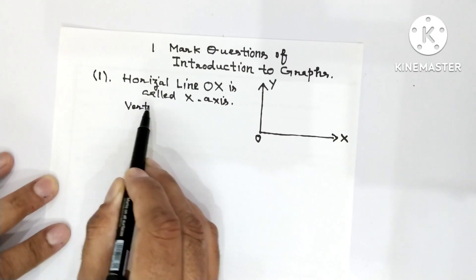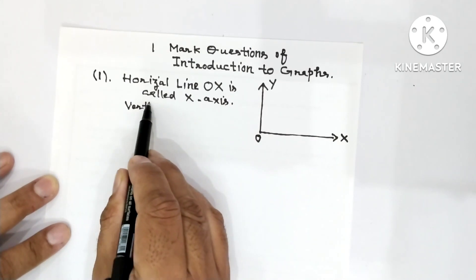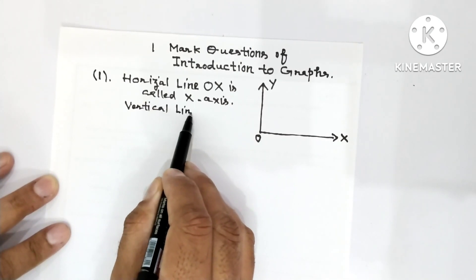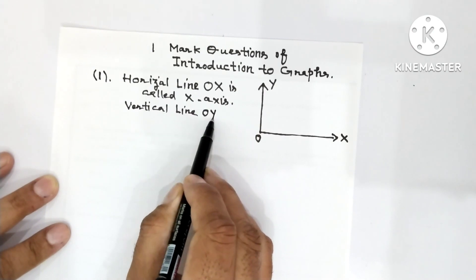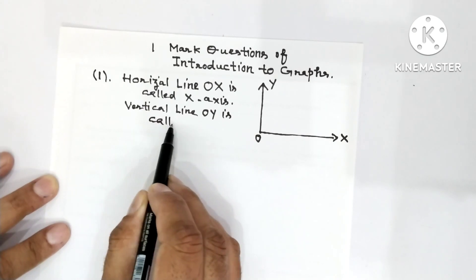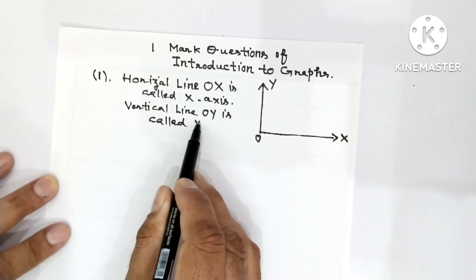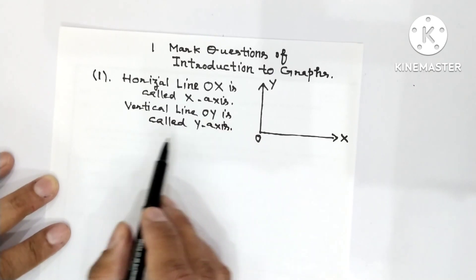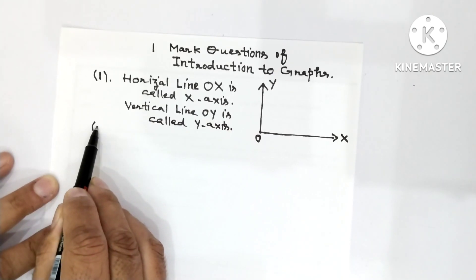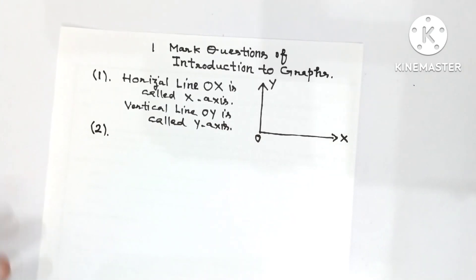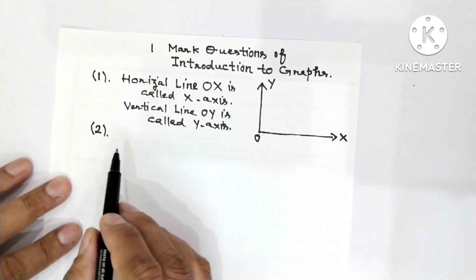This is the vertical line. The vertical line OY is called the Y-axis, and the point at which both the axes are meeting, that point is called the origin. This is origin O.